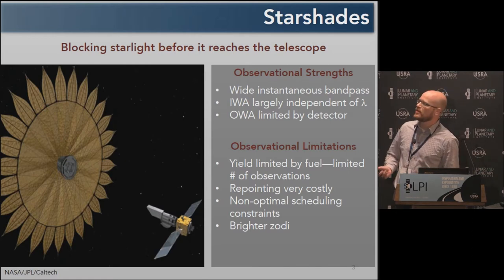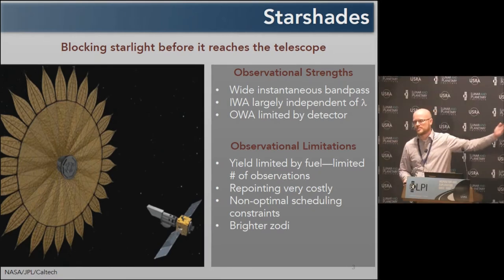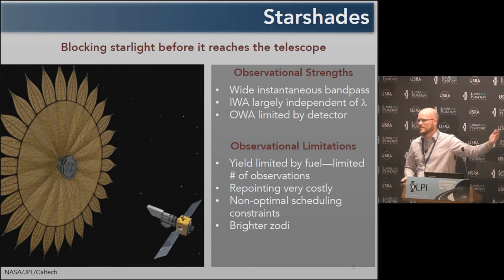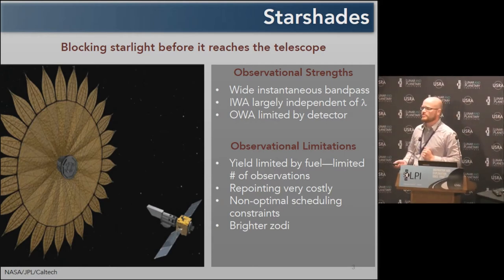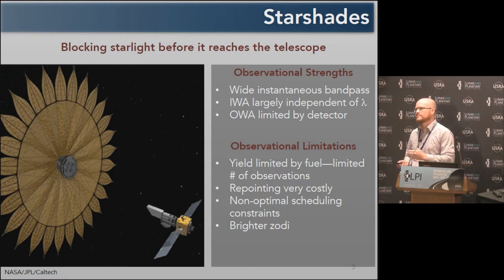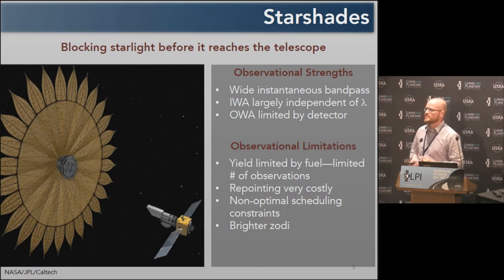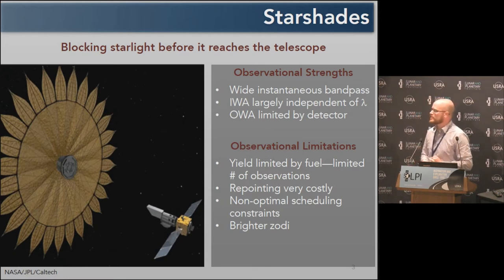Some limitations: the yield will ultimately be limited by fuel. Every time we want to repoint the telescope, we have to slew that starshade across the sky a tremendous distance, and because of the tyranny of the rocket equation, repointing is very costly. In addition, we cannot reflect sunlight into the telescope, so there's a very specific orientation a starshade can be at on the sky. For that reason, we won't really be able to optimize when we observe a given system — you might have a month and a half out of a year in which you can observe a given star.